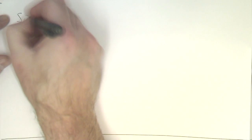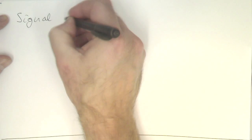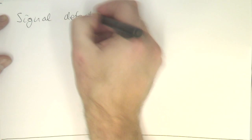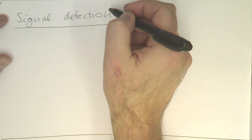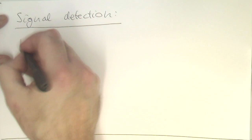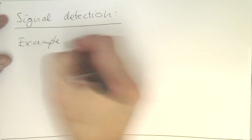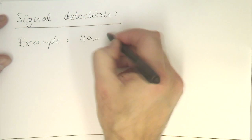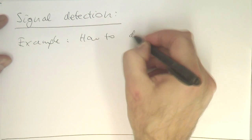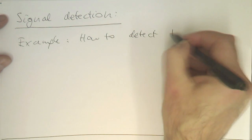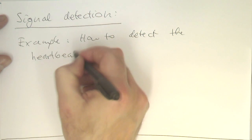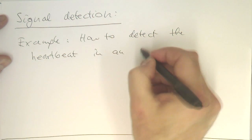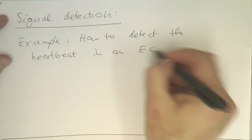So, let's now talk about signal detection. Our task or our problem is, or our example, is how to detect the heartbeat in an ECG.